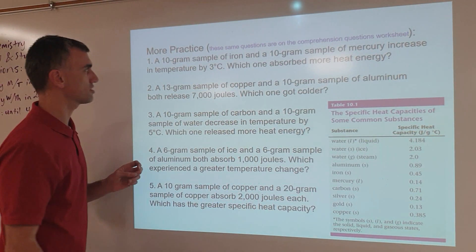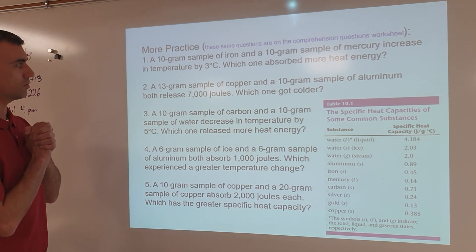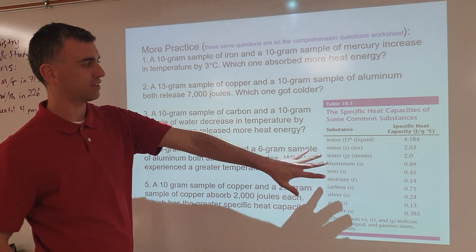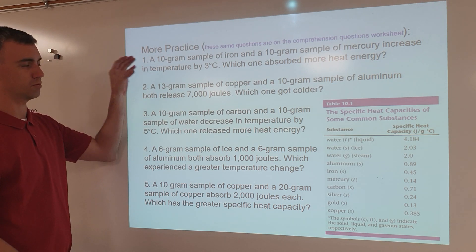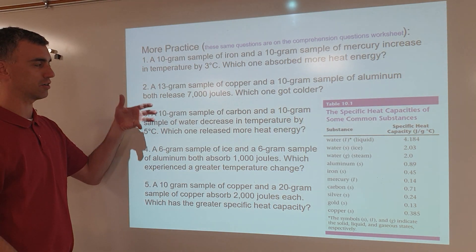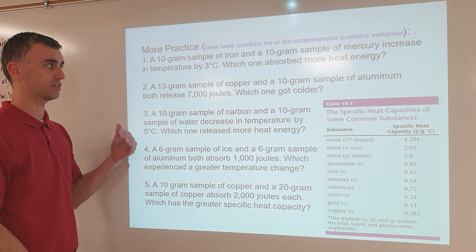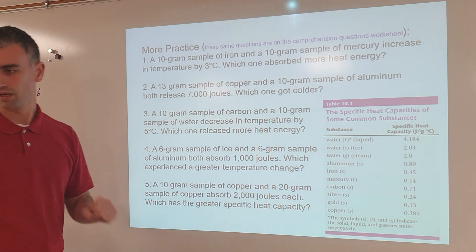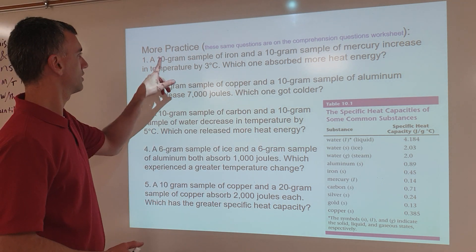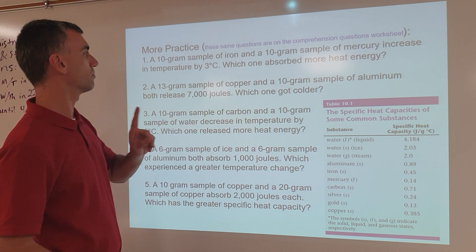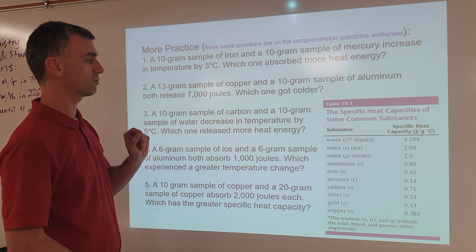Here are some interesting conceptual questions about specific heat capacity, and predicting how that affects the way substances gain or lose energy, or rise or decrease in temperature. A 10 gram sample of iron and a 10 gram sample of mercury both increase in temperature by 3 degrees Celsius. Which one absorbed more heat energy?